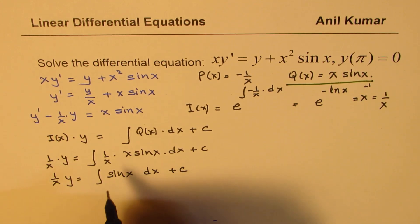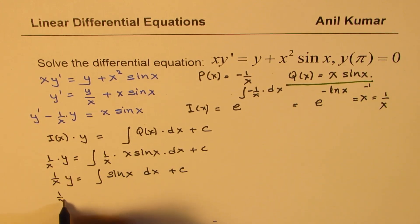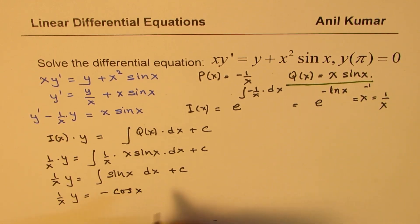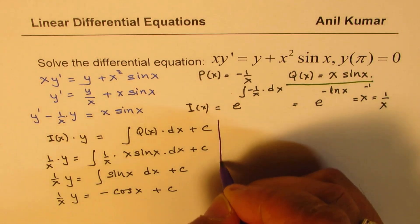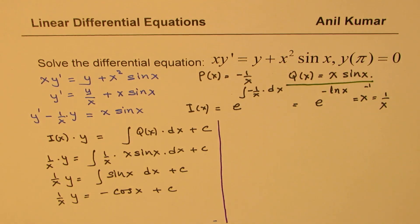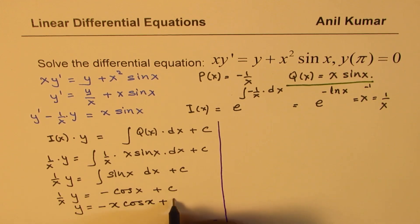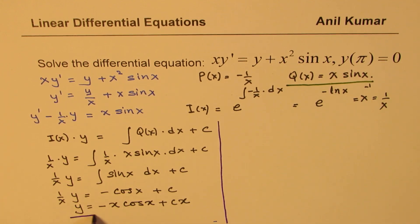Integrating sin x gives minus cos x plus c. So (1/x) times y equals minus cos x plus c. Multiplying both sides by x, we get y equals minus x cos x plus cx.